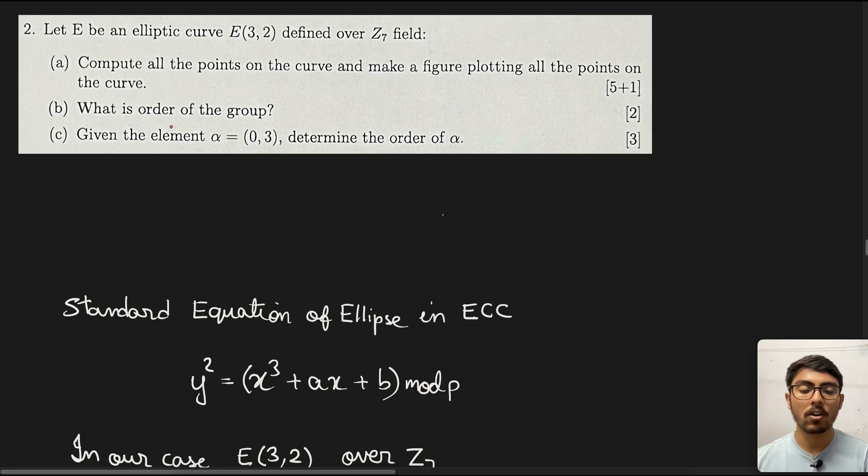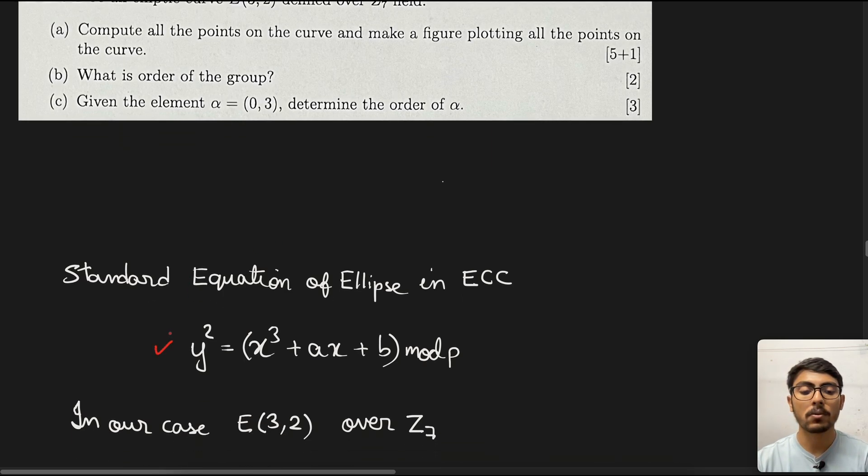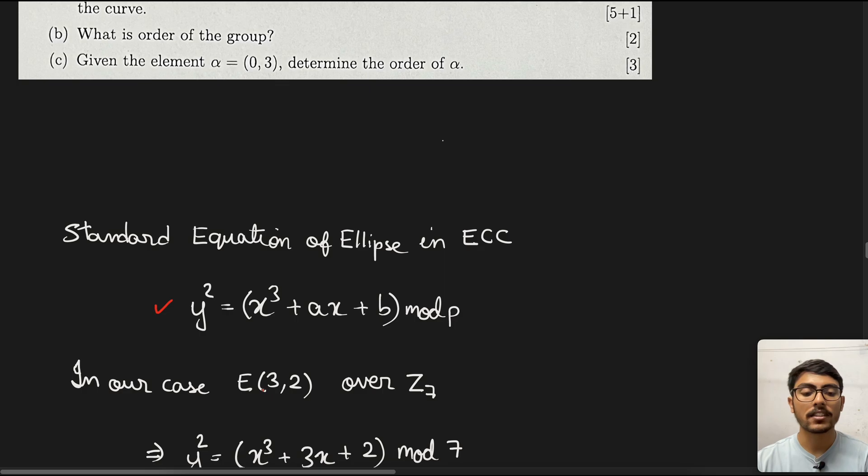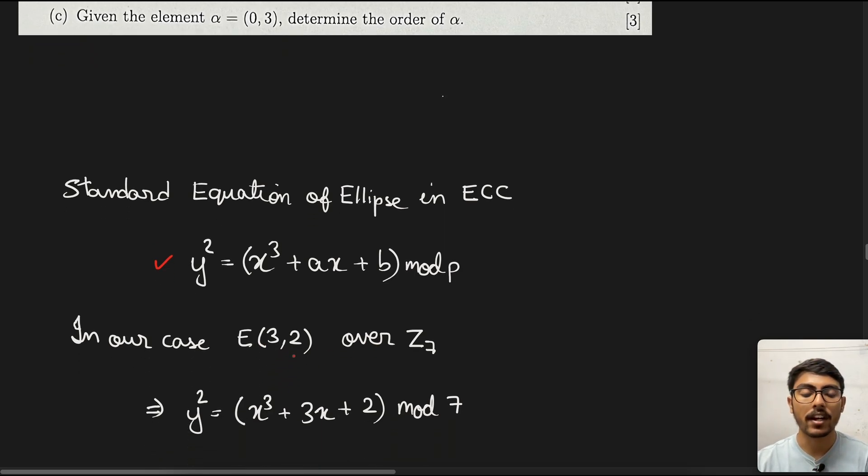Next, what is the order of the group? Given the element alpha (0,3), determine the order of alpha. First, we will look into the standard equation of ellipse in elliptic curve cryptography, which is y² = x³ + ax + b mod p. In our case, it is given E(3,2) over Z7. Hence, value of a is 3, b is 2, and p is 7.